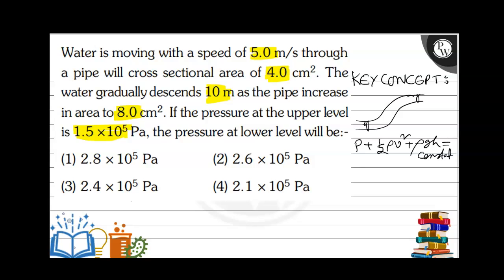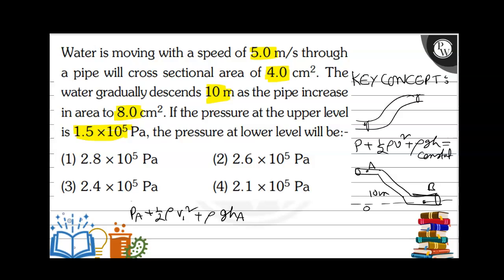The pipe is of 4 centimeter square cross-section at the upper level, and as it falls down 10 meters, the cross-sectional area becomes larger. I take the lower level's potential energy as zero. This upper point is A and the lower point is B. Applying Bernoulli's equation at A: P_A plus half rho v_A squared plus rho g h_A.